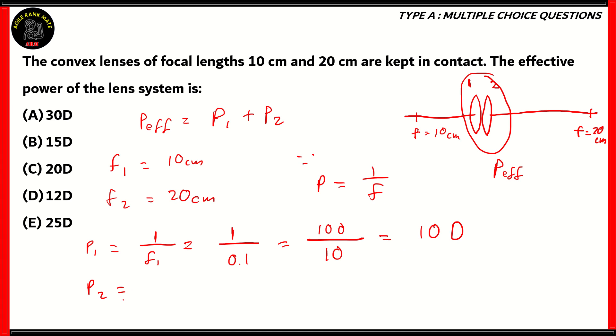As for the second lens, its power would be 1 upon f2, but since we have f2 in centimeters, we will use 100 instead. So it would be 1 upon 0.2 in meters, which would be 100 upon 20 in centimeters. So we get 5 diopters. So therefore, p1 plus p2, that is P effective, would be equal to 10 plus 5, which is 15 diopters. So 15 diopters is the correct answer for the first question, and as you can see, the correct option is given by option B.